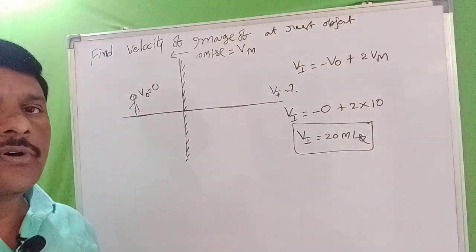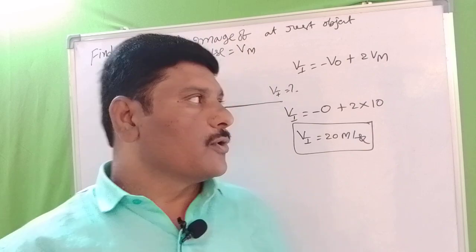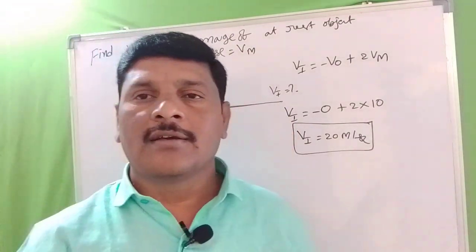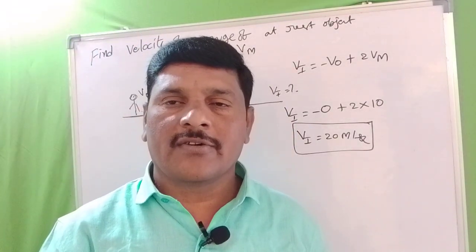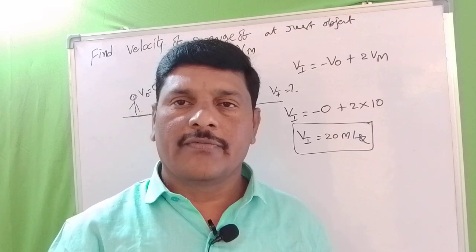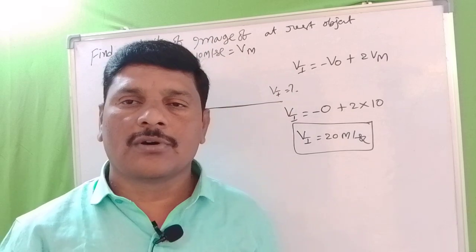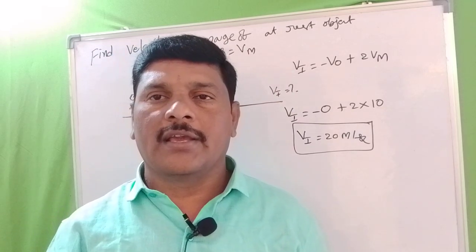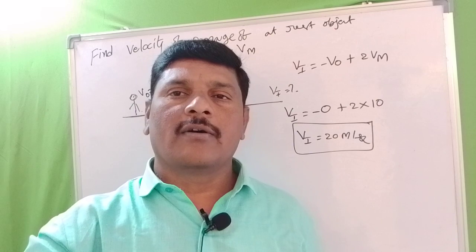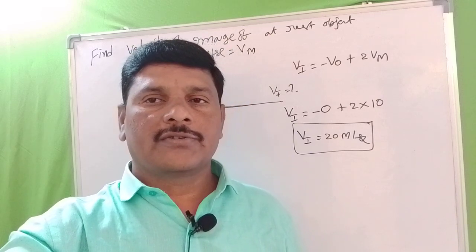Next, we will consider something with an angle theta, which could be equal to 37, 52, 53, or 45 degrees, related to the mirror. We will find out the image velocity for that case in the next video.